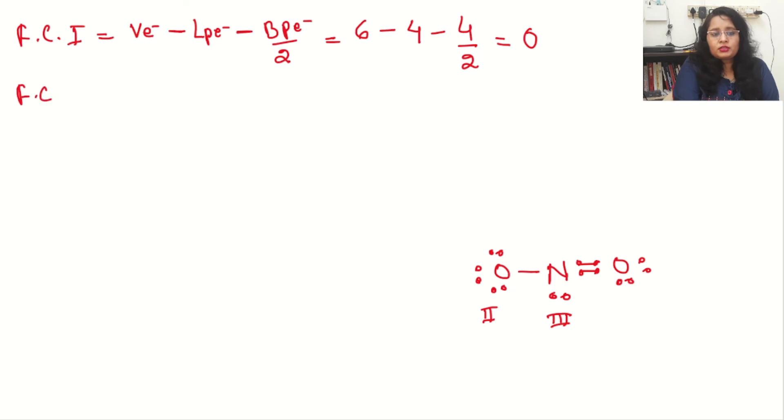Now come up to the formal charge on atom number 2, that is the second oxygen. Valence electrons again 6. Now lone pair, how many lone pair electrons? 1, 2, 3, 4, 5, 6. We can say 6 lone pair electrons. Minus bond pair, only 1 and 2. 2 bond pair electrons divided by 2. Now 6, 6 cancel. 2 by 2, it means minus 1. So we can say clearly that the oxygen number 2 is having a formal charge minus 1. And this we already drawn in our structure and now it is proved by the formula.